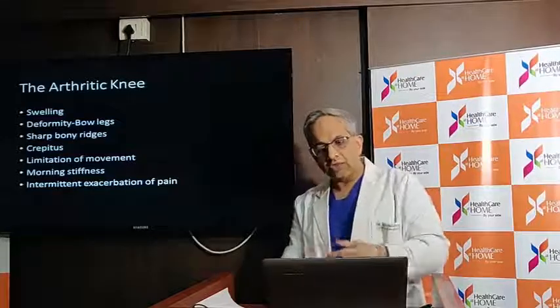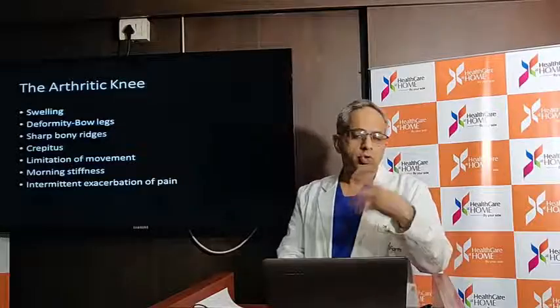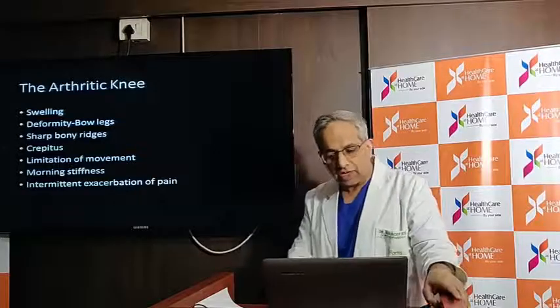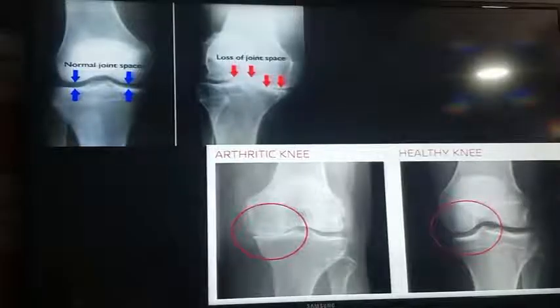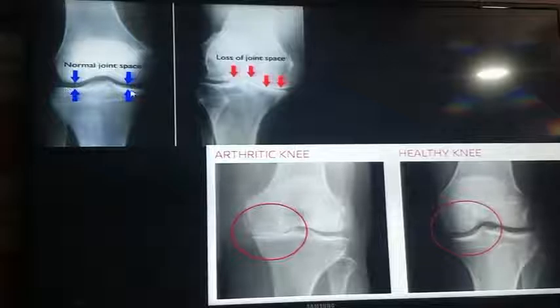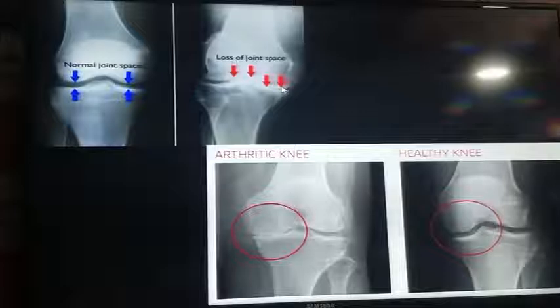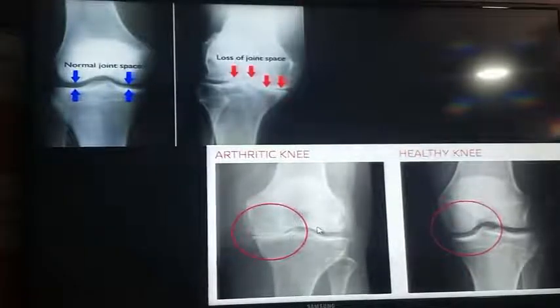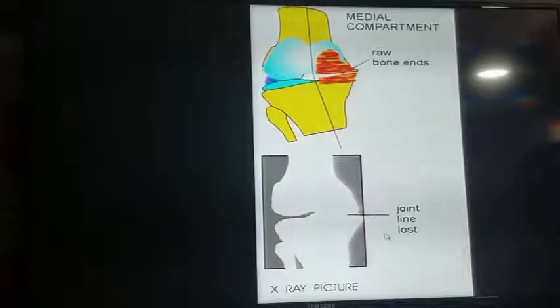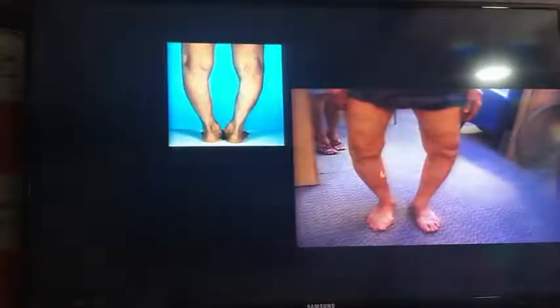Gradually movement decreases. In the morning when getting up, there is considerable stiffness. On X-ray, you can see that in a normal joint there is a space, but in an arthritic joint the bones are rubbing against each other — the cartilage has worn away and the joint space has narrowed. As the cartilage wears away on the inner side, patients start becoming bow-legged, with both knees bending inward, because the inner side of the joint tends to wear out faster.